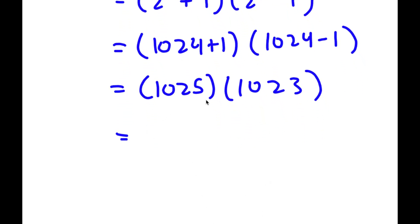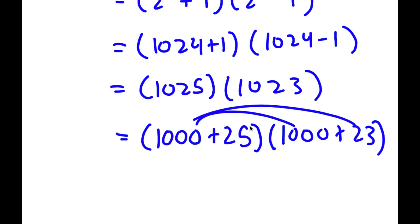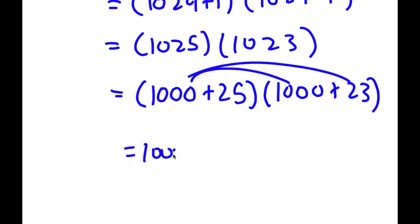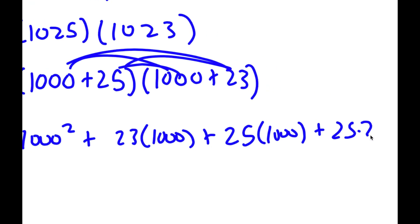An easier way to solve this, instead of just multiplying these two, is I'm going to rewrite these with 1,000s. So 1,025 is 1,000 plus 25, and 1,023 is 1,000 plus 23. This makes it a lot easier to find the product because we can simply distribute: 1,000 times 1,000 is 1,000 squared, plus 1,000 times 23, plus 25 times 1,000 plus 25 times 23.